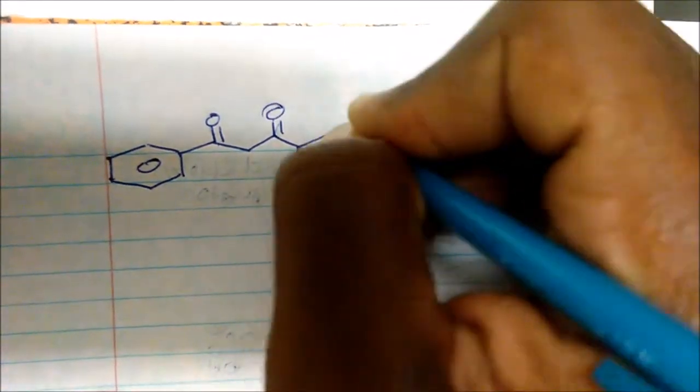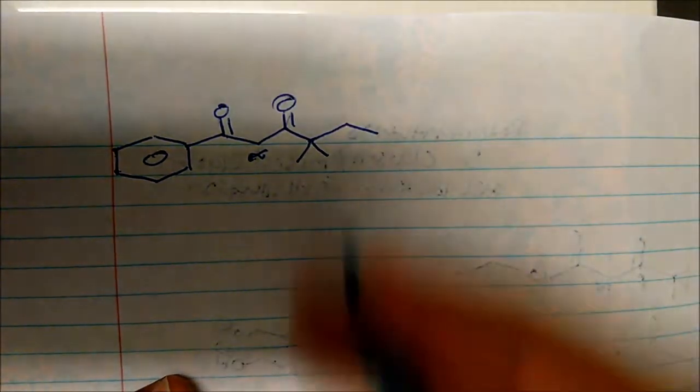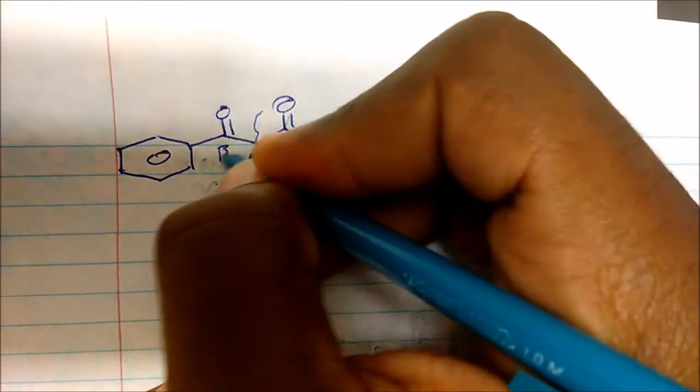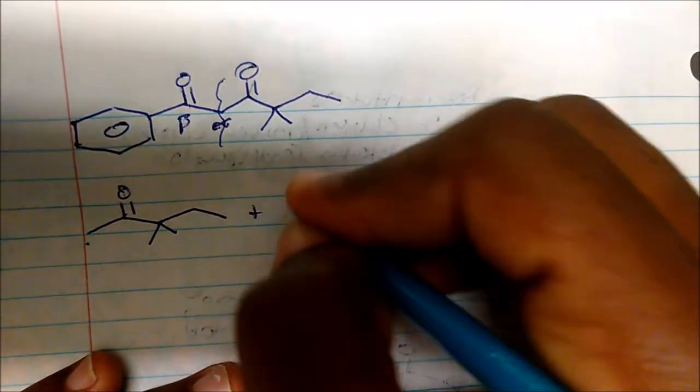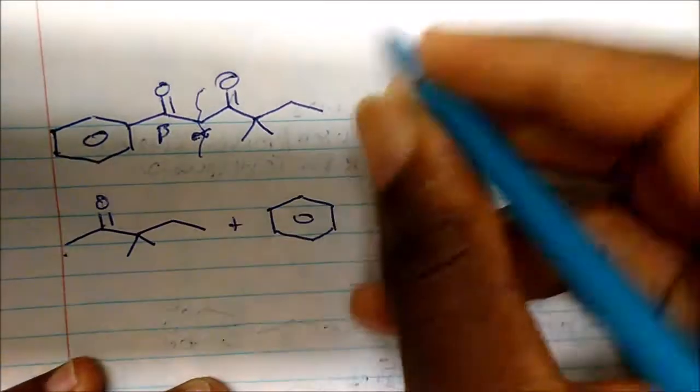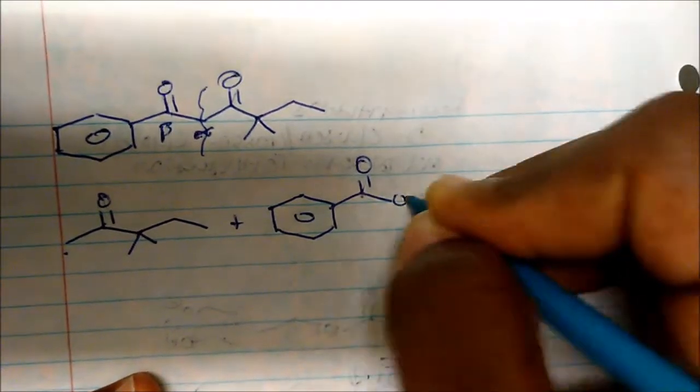Now, what if on a test you were given this one? How would we make it? Well, again, identify your alpha carbon - there's my alpha carbon. If I split it in half, where's my beta carbon? I could choose either one, so let's choose this to be the beta carbon. Remember we said that if this is our beta carbon, it has to contain a leaving group. So I could get this from this molecule here, where this is my alpha carbon, plus this molecule here - there's my beta carbon but it contains a leaving group.